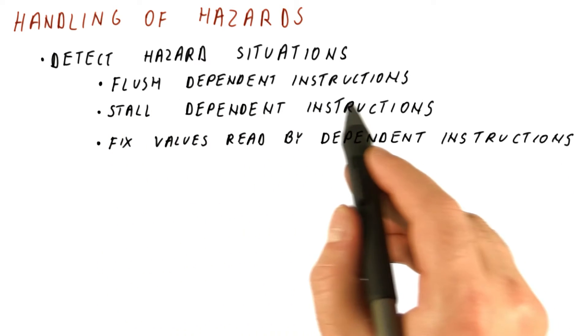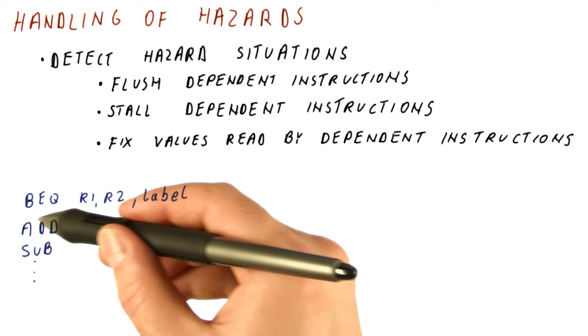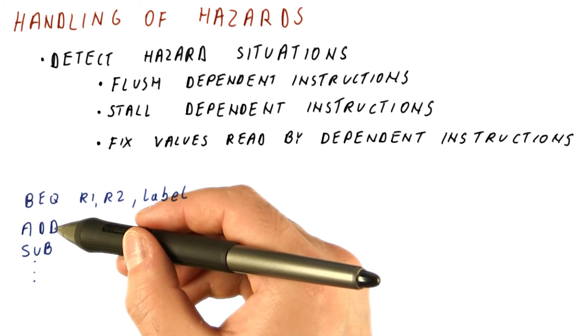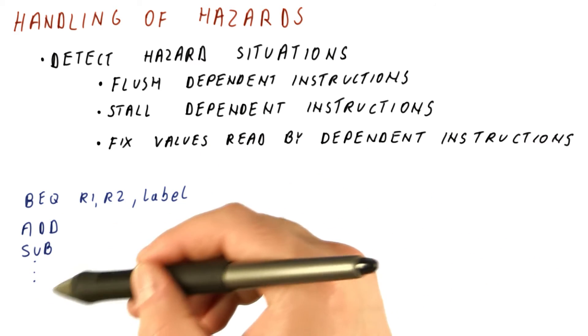We need to use flushes for control dependencies because the instructions we have in the pipeline, after a control dependence becomes a hazard, are the wrong instructions.